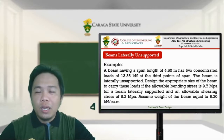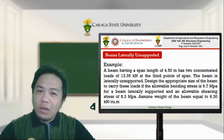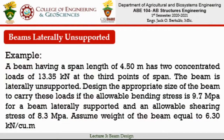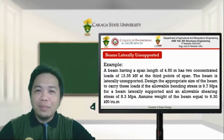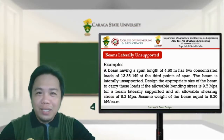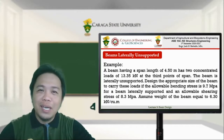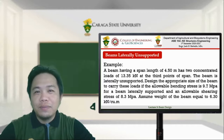Note that some problems will not explicitly state whether a beam is laterally unsupported; you can verify using the formula l over b greater than 20. The problem asks us to design an appropriate beam size to carry these loads. The allowable bending stress is 9.7 MPa for a laterally supported beam, allowable shear stress is 0.83 MPa, and the unit weight of the beam is 6.30 kN per cubic meter.